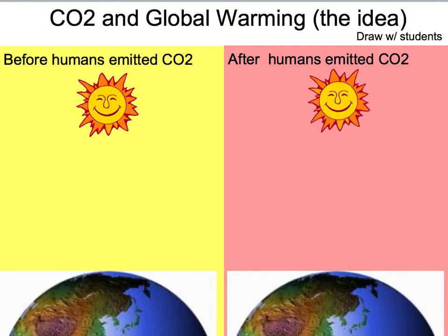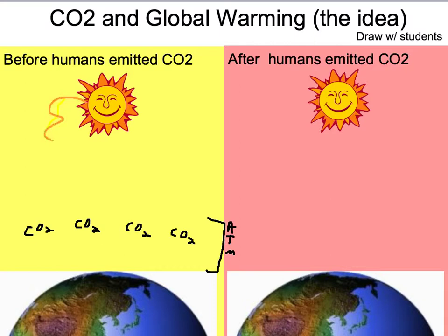Volcanoes and other sources put carbon dioxide into our atmosphere long before we were tinkering with things, and that represents our atmosphere. There's oxygen, nitrogen, and other gases, but carbon dioxide is the one we're concerned with today. The sun gives out visible light, and it goes right through carbon dioxide just fine.